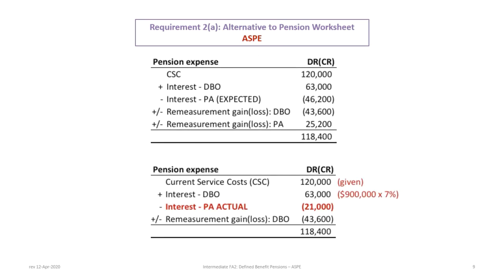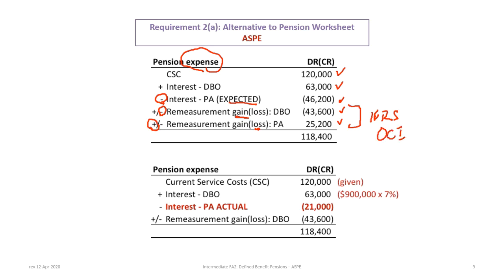Now we can show the alternative to determining the pension expense without using a pension worksheet. We have the current service costs, add the interest on the DBO, subtract the expected return on plan assets of $46,200, subtract the remeasurement gain on the DBO of $43,600, and add back the remeasurement loss on the plan assets of $25,200. Under IFRS these would go to OCI, but under ASPE they're included in pension expense for a total of $118,400. Alternatively, you could simply include the actual return of $21,000 and leave it at that.